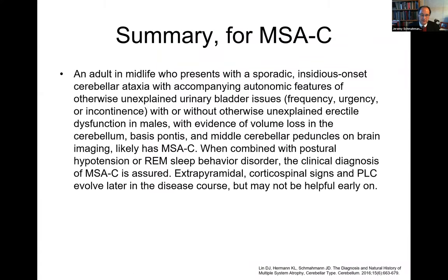The summary for MSA-C from our review of patients over many years in the ataxia center: an adult in midlife who presents with a sporadic, out-of-the-blue, slowly evolving ataxia with accompanying autonomic features — otherwise unexplained bladder issues including frequency, urgency, or incontinence — with or without unexplained erectile dysfunction, who also has evidence of volume loss in the cerebellum, pons, and middle peduncles on imaging, has MSA-C. The extrapyramidal features may develop later; corticospinal features and pathologic laughing and crying can evolve during the course but may not be present early.